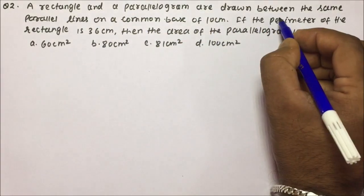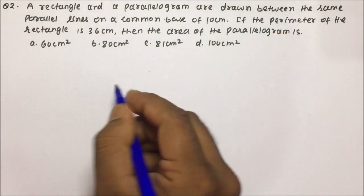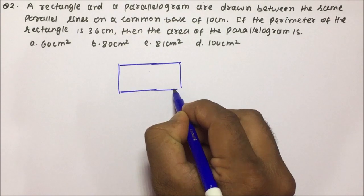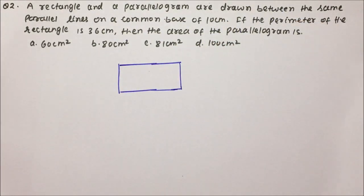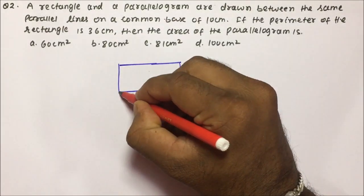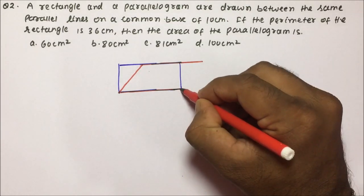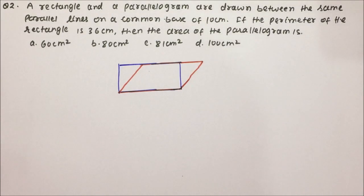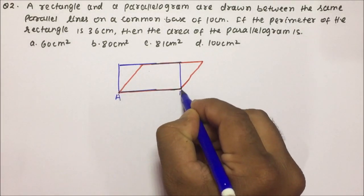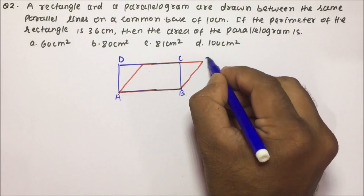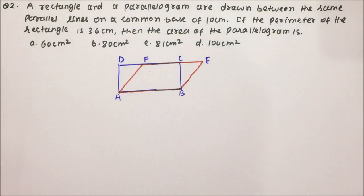Now moving towards question number 2. A rectangle and a parallelogram are drawn between the same parallel lines. So this is my rectangle, and using the same parallel lines, this becomes one rectangle and one parallelogram. I'll label them: A, B, C, E and then D, E, F — giving names to both the rectangle and the parallelogram.